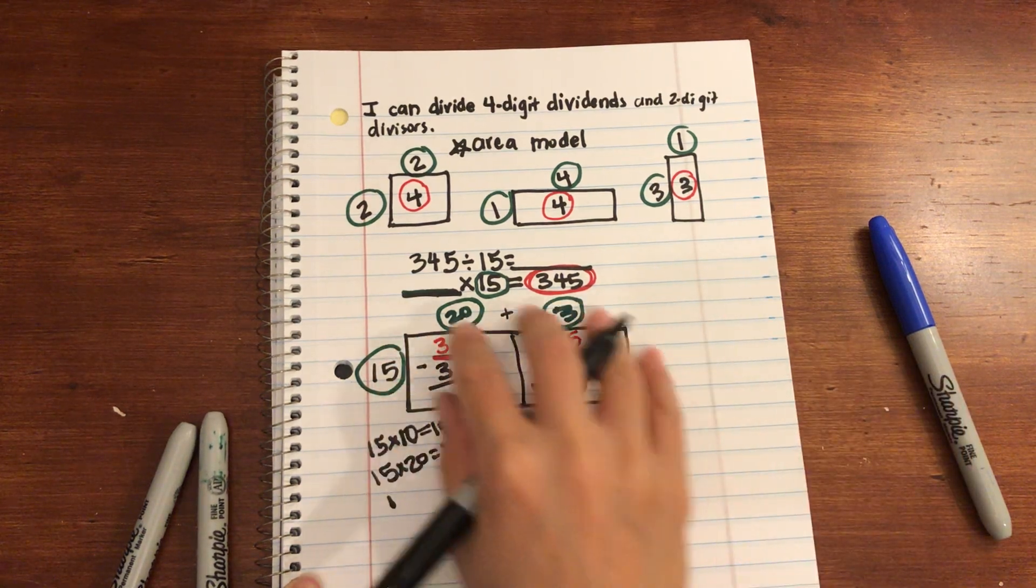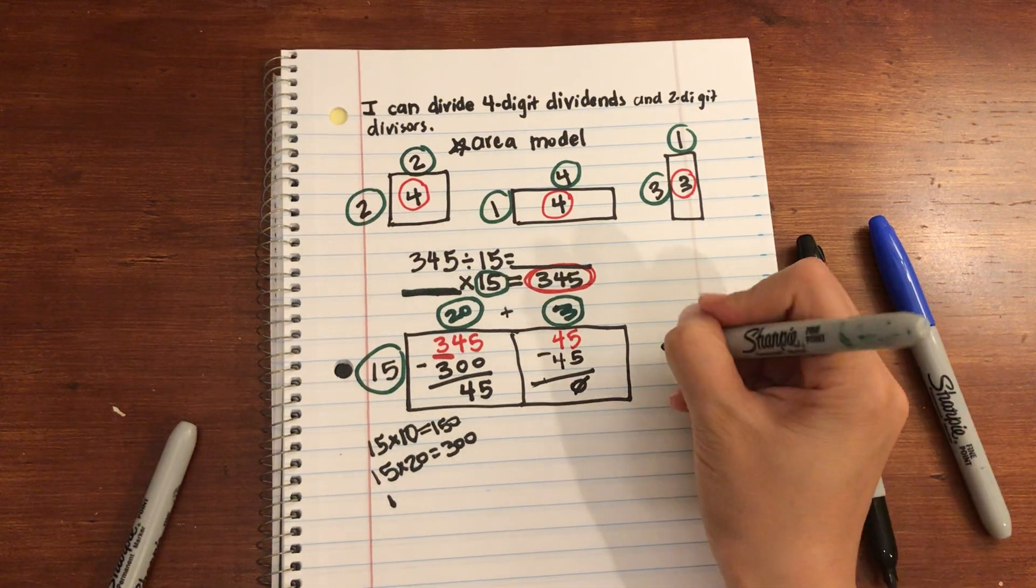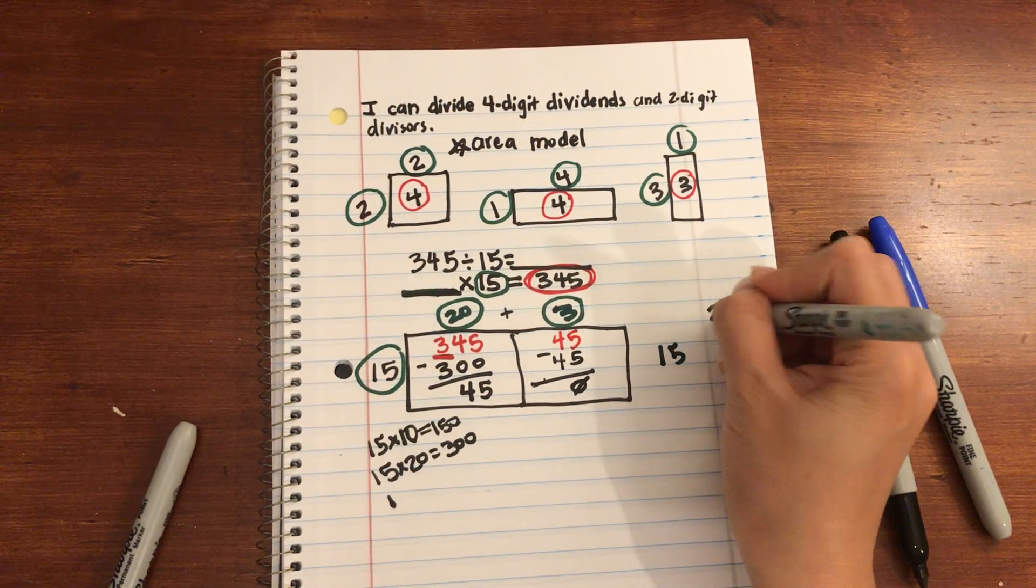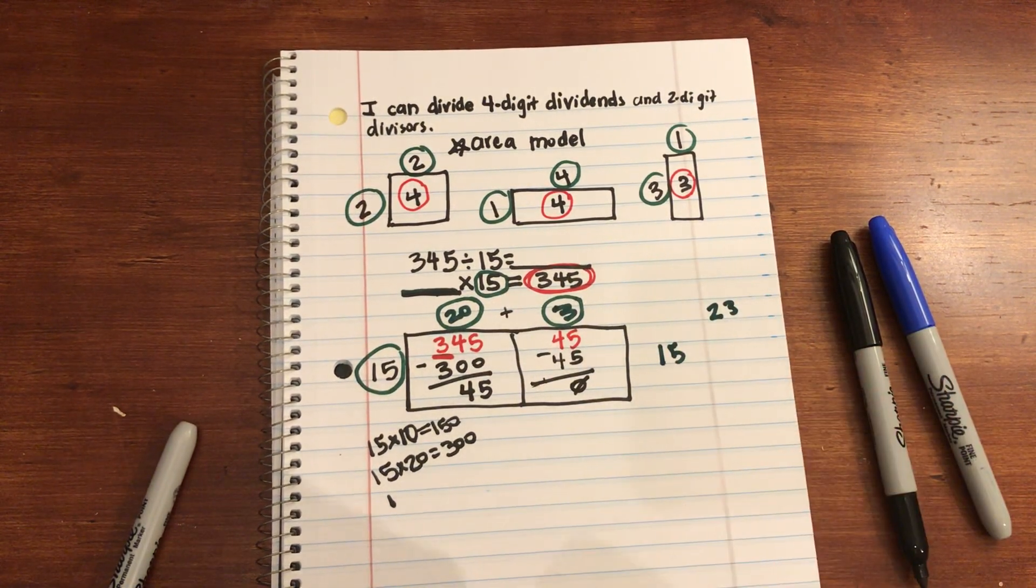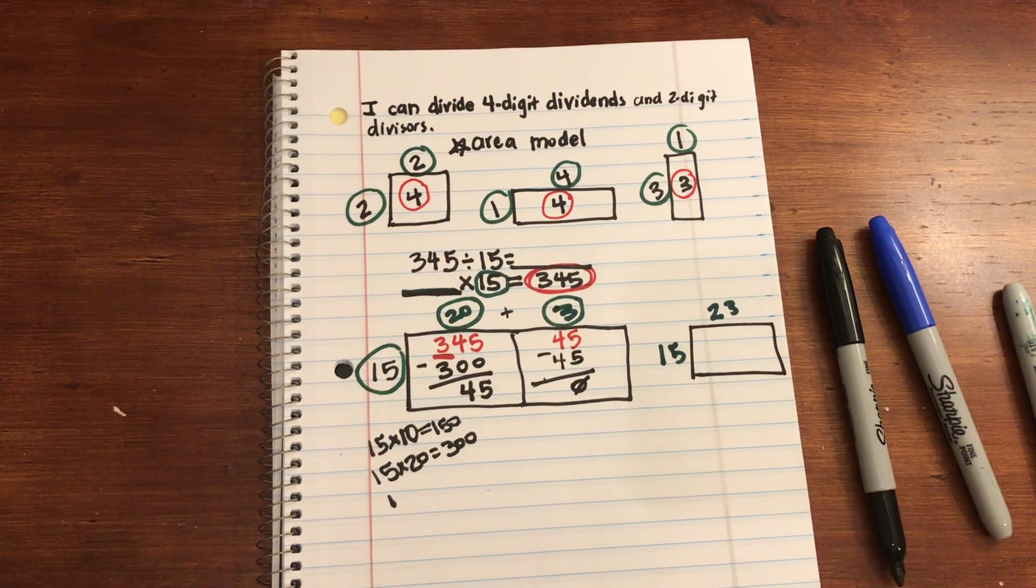Now looking again at this, and comparing it to one of these, I'm going to add. I have 15 by a 23. 20 plus 3. If I multiply those together, I should get 345.